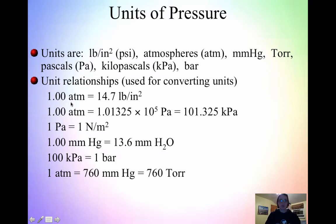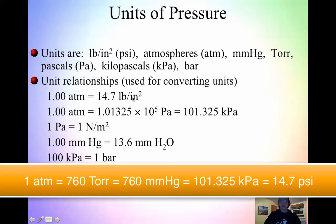1 ATM is equal to a lot of things: 1 ATM equals 14.7 pounds per square inch; 1 ATM also equals 101.325 kPa; 1 ATM also equals 760 millimeters mercury, or 760 torr. All of these are equal, which means you can go directly from pounds per square inch to torr using the relationship 14.7 PSI equals 760 torr. These are the conversion factors to use when going between pressure units.